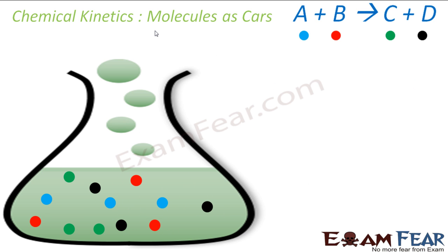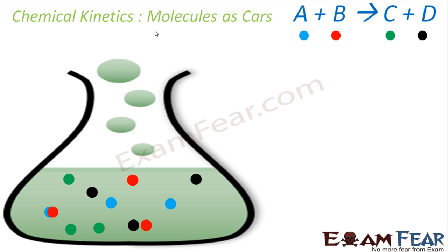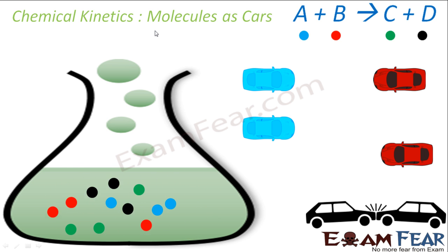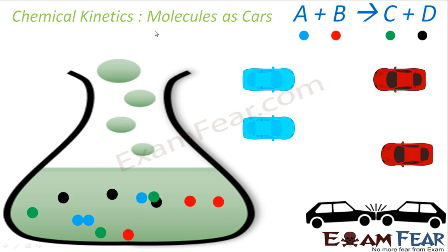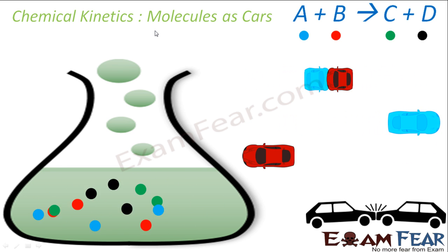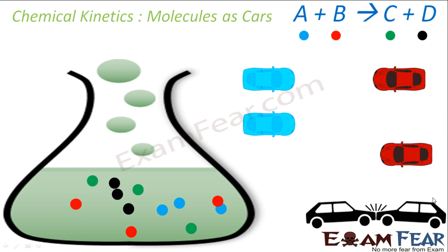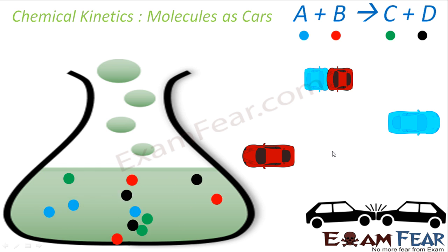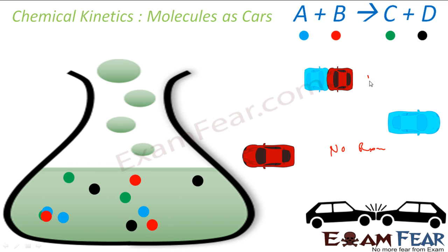I will assume the molecules as cars, and the bumping of molecules is similar to the bumping of cars. If the cars bump each other at a very high speed and almost ramp each other, they break one another — then I will call a reaction happened. In the first case, the two cars ramped and the reaction happened. In the second case, the cars didn't even touch each other, so there was no reaction.